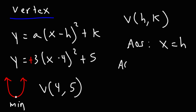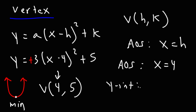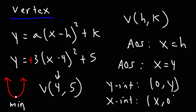x is usually associated with the location of the minimum, while y is associated with the value of that minimum. The axis of symmetry for this example is x = 4. To find the y-intercept, set x = 0 and solve for y. To find the x-intercepts, set y = 0 and solve for x.